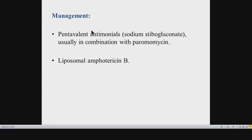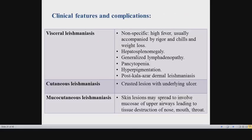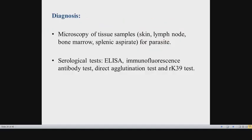Along with specific anti-leishmanial drugs, it is important to also treat complications. Patients may present with bleeding manifestations, secondary infections, or severe anemia. Supportive treatment includes blood transfusion, platelet transfusion, and antibiotics for secondary infection. Attention should be paid to the nutritional and hydration state, keeping patients well-hydrated with good nutrition, as these patients tend to develop weight loss and can become dehydrated.